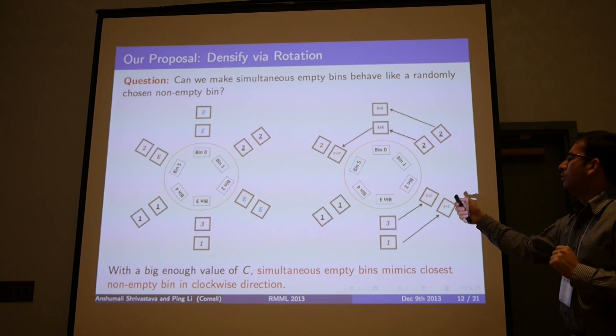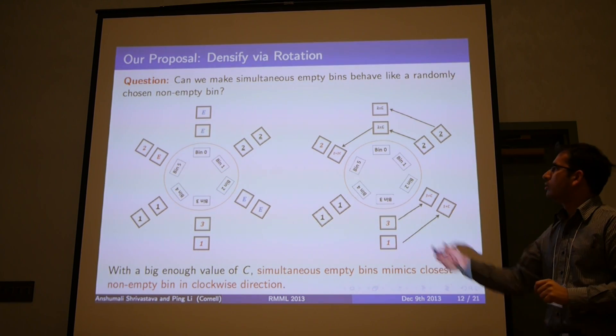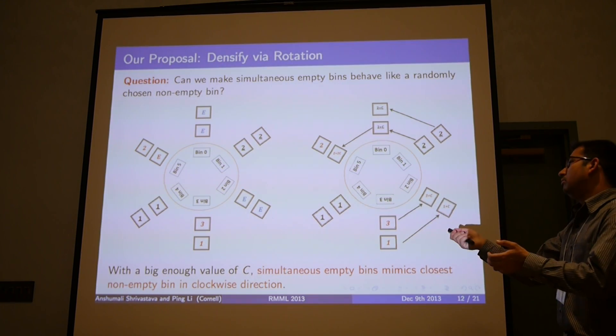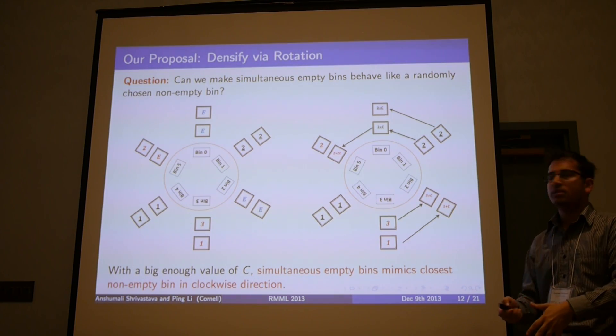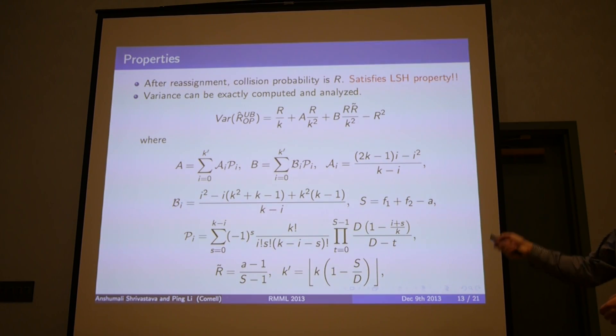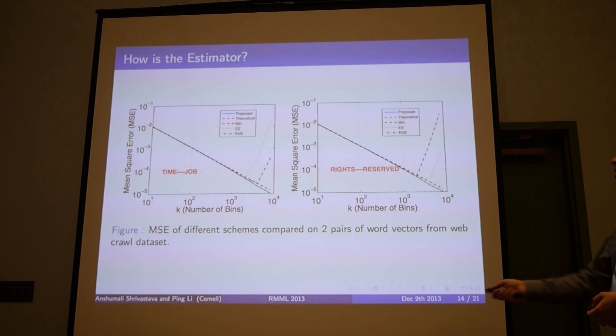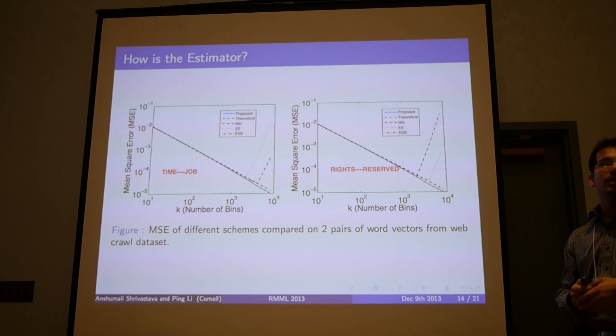It's not difficult to show that this bin will behave very much like this bin, so these simultaneous empty bins are behaving exactly like the closest simultaneously not empty bin in the clockwise direction. The permutation is random, so this counts like randomly selecting non-empty bins for the empty bins. It's not difficult to show that after the reassignment, the collision property is exactly R, which satisfies the LSH property. We can also analyze the variance, and in fact, the variance is not really very bad. On some real datasets, it does even slightly better than minwise hashing for the job of estimation.